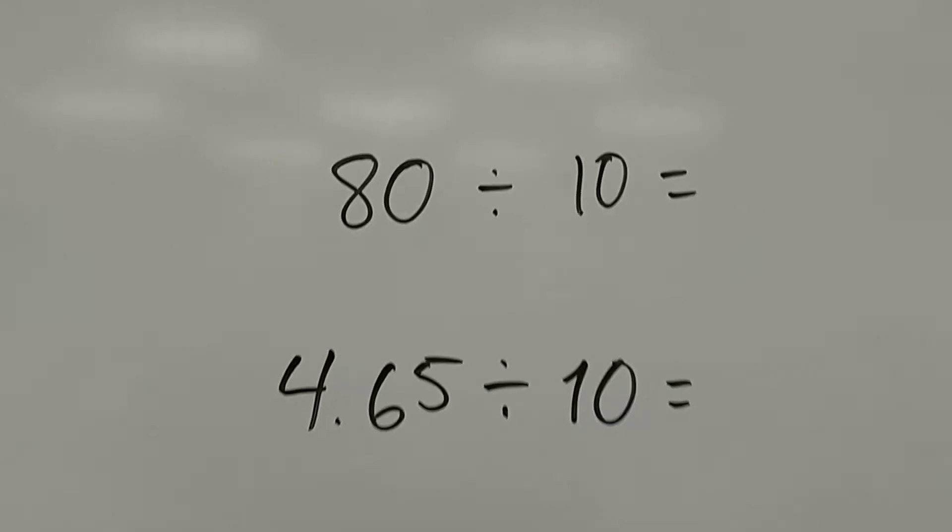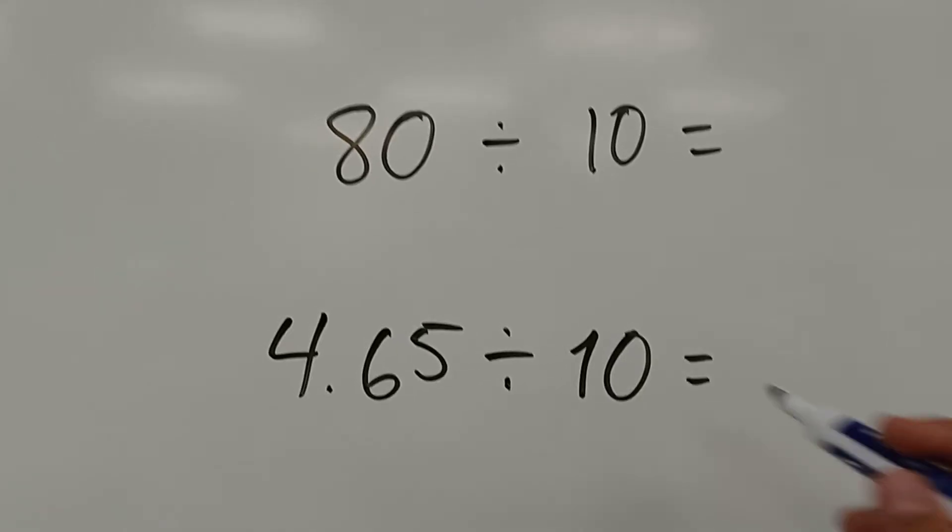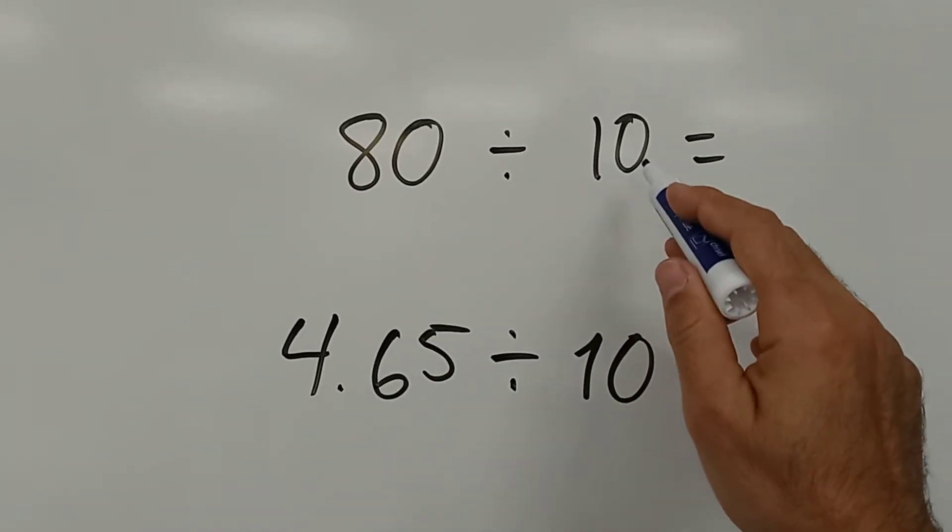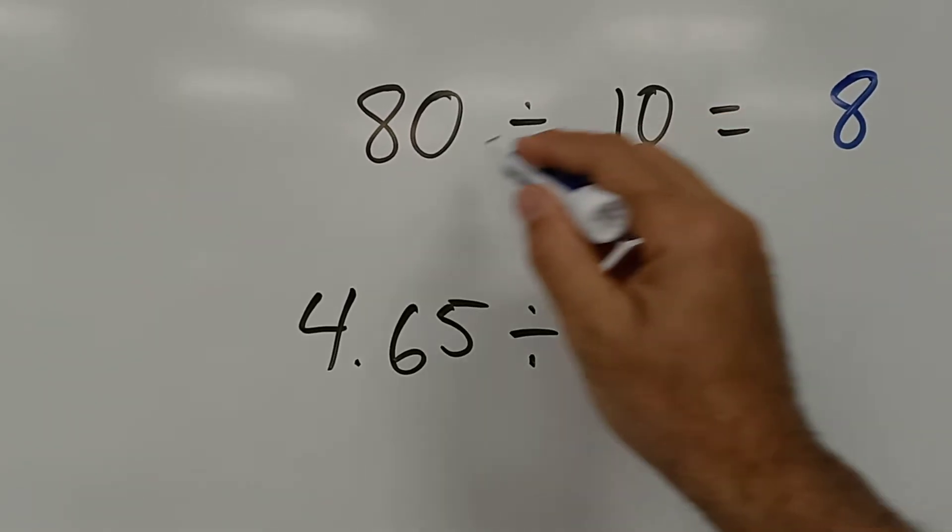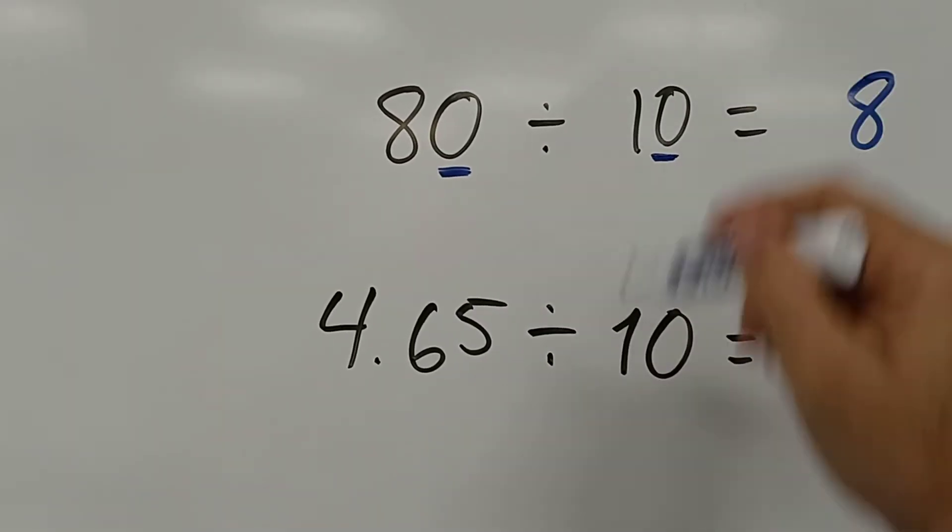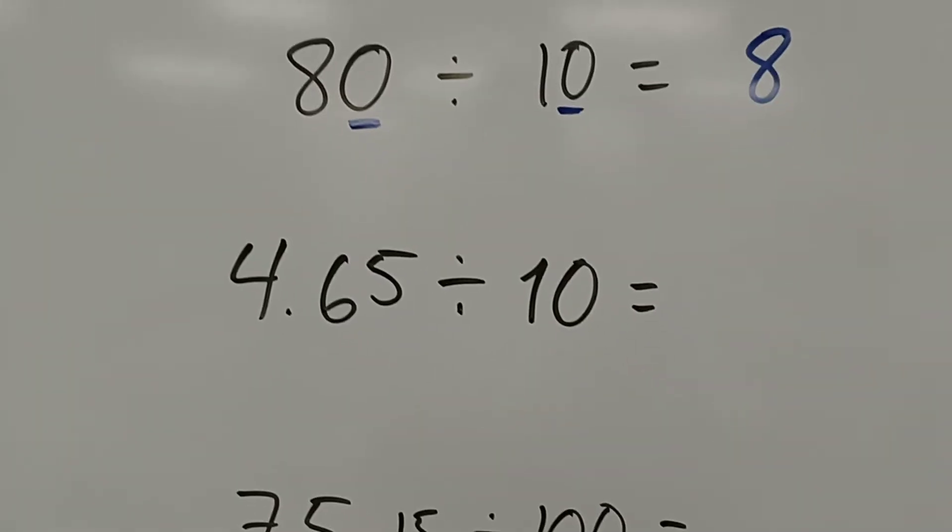The same thing happens when you do division. The only thing is that in division, you go to the left. 80 divided by 10, you know that it's just 8. This zero and this zero, we simplify the zeros.